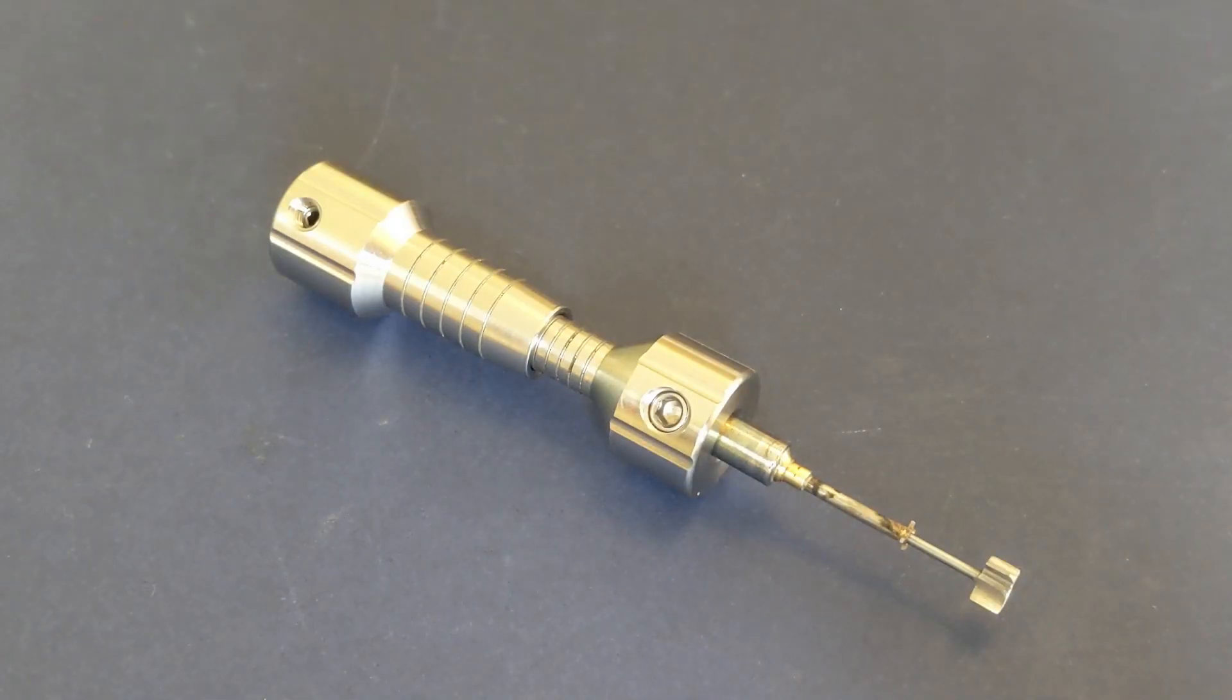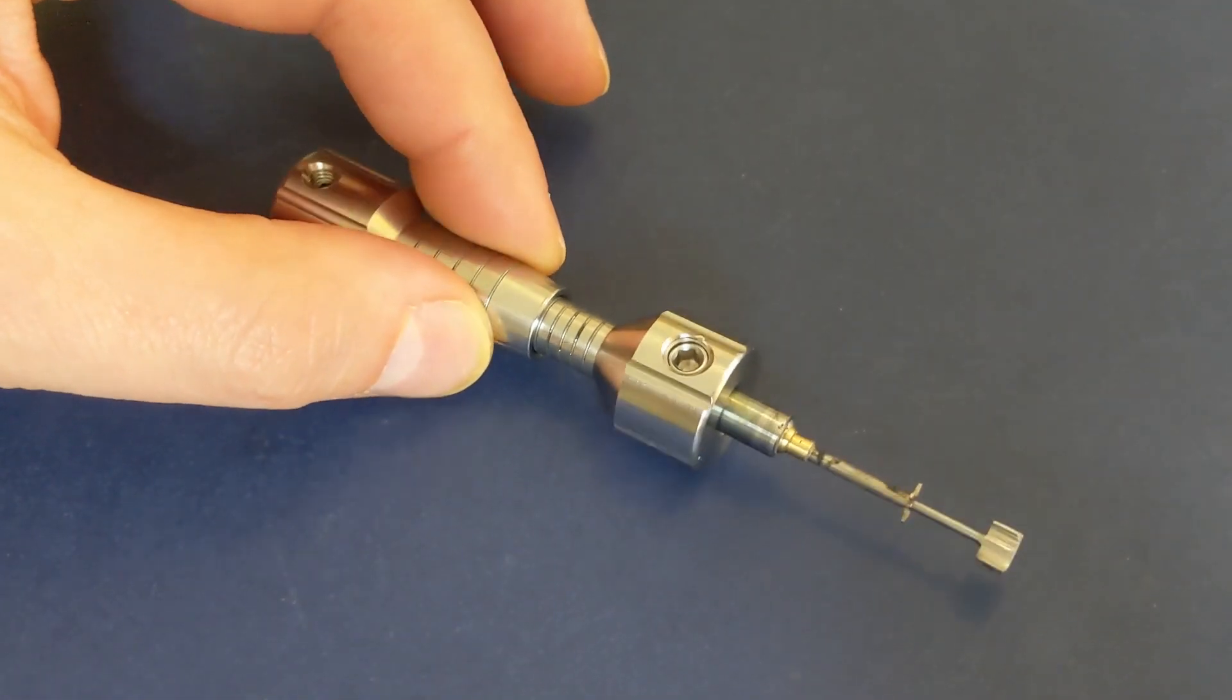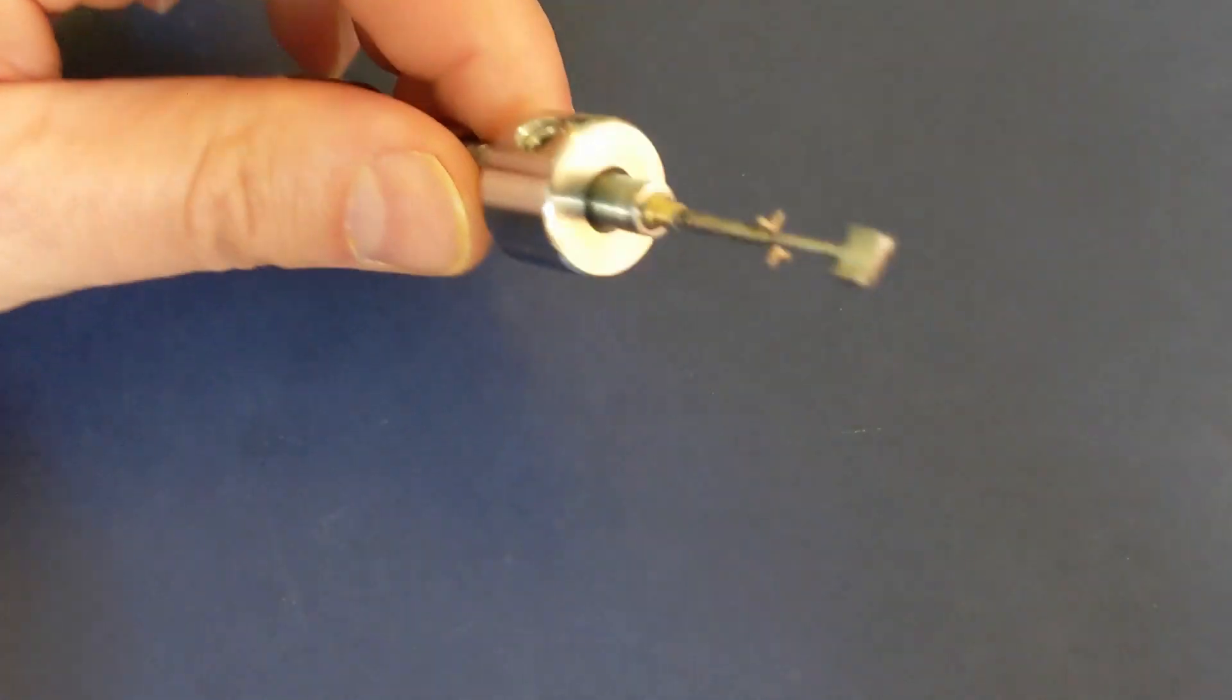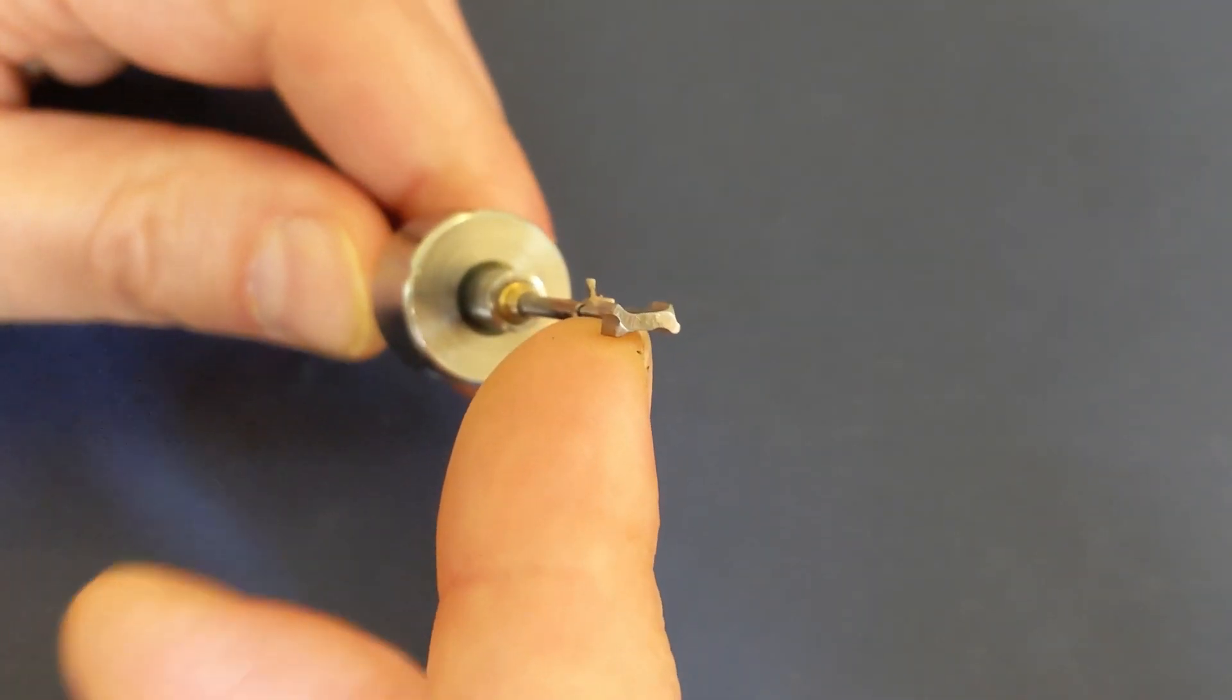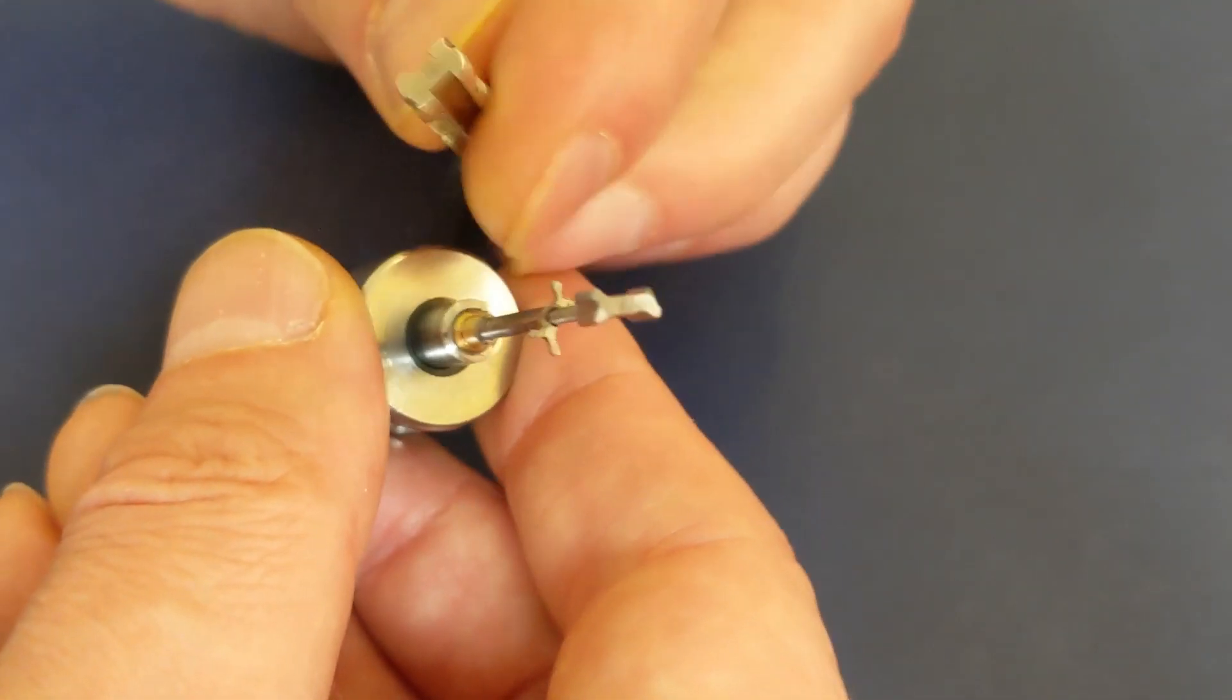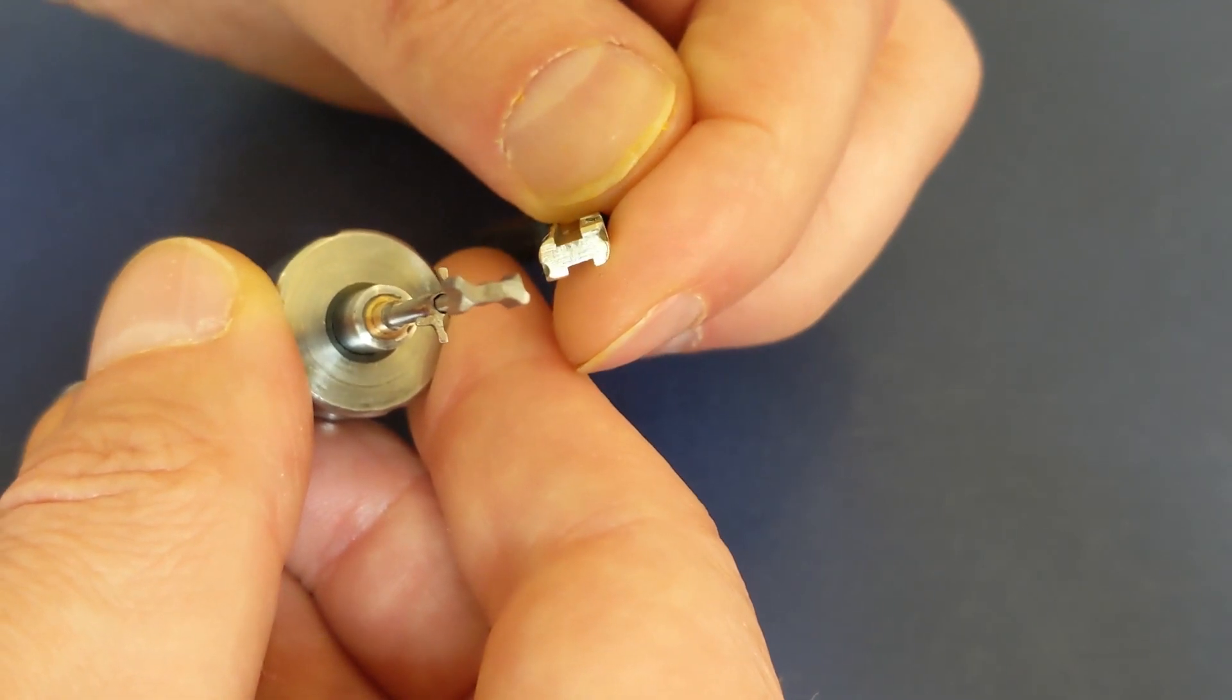So this is the tool I'm using. It's the Discertainer pick from RWB custom picks which I've made some new tips for. The tensioner looks like this, it's similar to the key profile but with some additional material removed for reasons I'll show you in a minute.